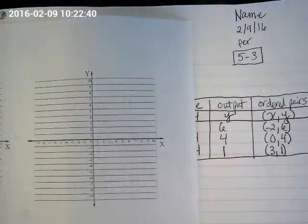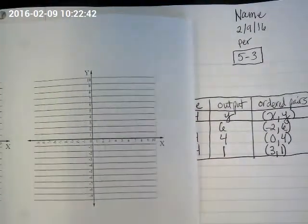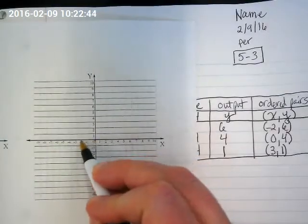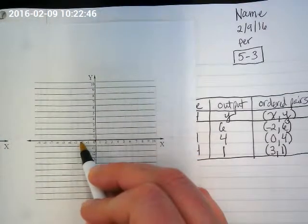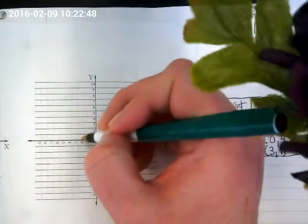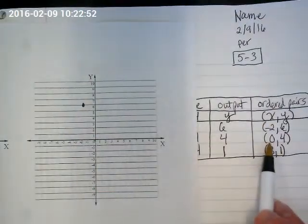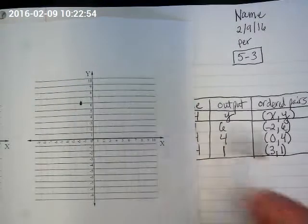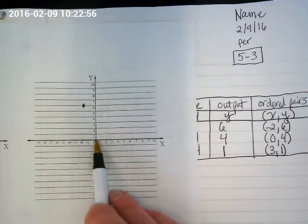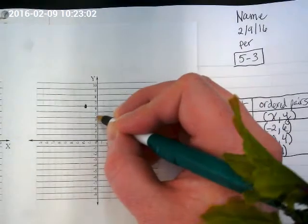So we have negative 2 and 6. We start at the origin and go to the what? Left to negative 2 and then up to positive 6. So it is right here. And then I have 0 comma 4. Starting at the origin with 0, do I move left or right? But the second number on the y is 4, so I'm going to jump up to 4.